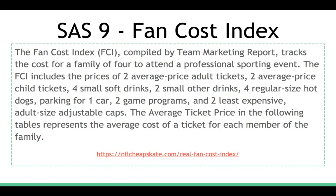The FCI, compiled by Team Marketing Report, tracks the cost for a family of four to attend a professional sporting event — regardless of the type: Major League Baseball, NBA, NFL. The FCI includes prices of two average-priced adult tickets, two average-priced child tickets, four small soft drinks, two small other drinks (meaning adult beverages), four regular-size hot dogs, parking for one car, two game programs, and two of their least expensive adult-size adjustable caps.